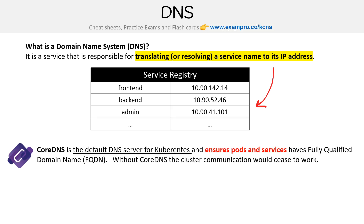So now we need to know about CoreDNS. CoreDNS is the default DNS server for Kubernetes. In the documentation, you might see something called KubeDNS, and that was the default prior to CoreDNS. It was replaced because it wasn't that modular and didn't have great plugin support. CoreDNS is the current default — you can swap it out, but this is the one you'll want to use because it's pretty good.